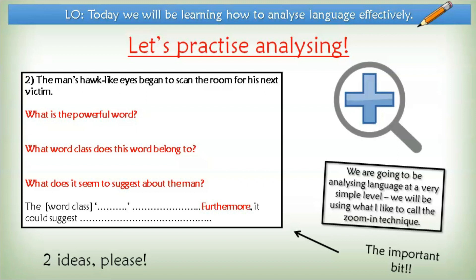I might be inclined to put something along the lines of: the adjective 'hawk-like' highlights the man's intent stare — it's clear he's ruthlessly seeking out his next victim. That's my first idea. And then I will go on to develop it using the connective 'furthermore': furthermore, it makes him seem like a brutal killer, one that's unstoppable. Anything along those lines would be sufficient.